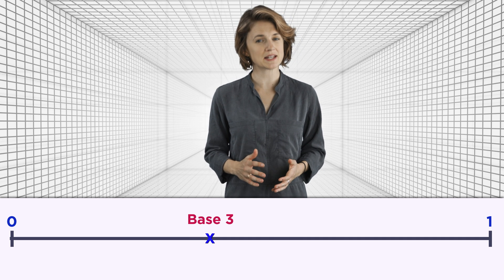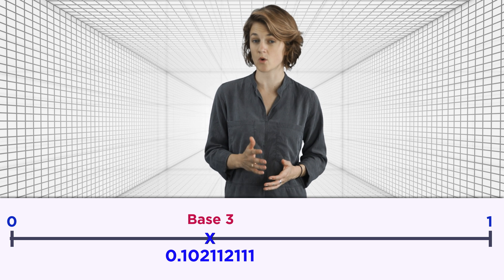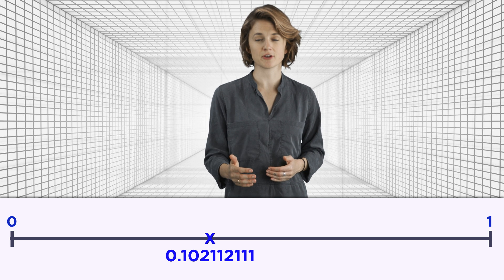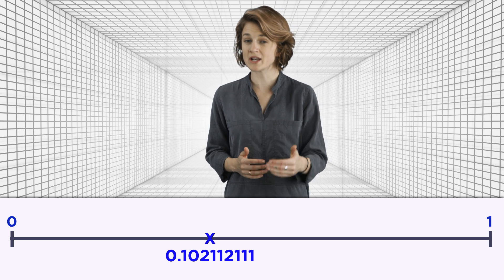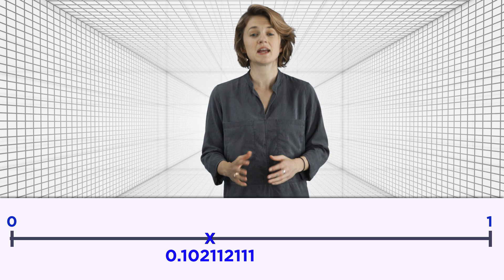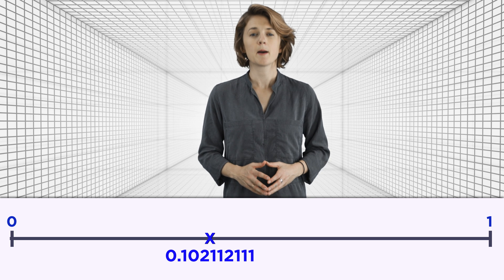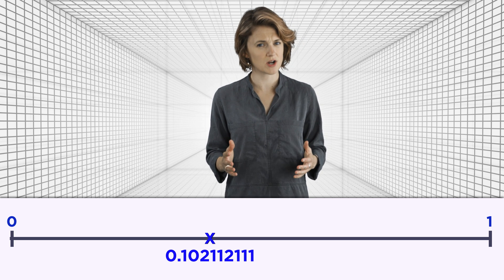The same point labeled in base 3 is 0.102112111. That means it's 1/3 plus 0/9 plus 2/27 plus 1/81 and so on. Instead of powers of 10, the decimal places are powers of 3. But interpreting it as a recipe for how to zoom in still works.